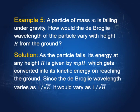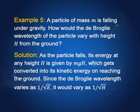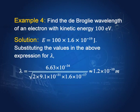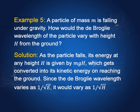A particle of mass M is falling under gravity. If the particle is at height h, it has potential energy Mgh. When it hits the ground this potential energy is converted into kinetic energy Mgh. We know E, and the wavelength is inversely proportional to the square root of E. Since E is proportional to h, the wavelength of this particle varies as 1 over square root of h — the square root of the height from which the particle is falling.